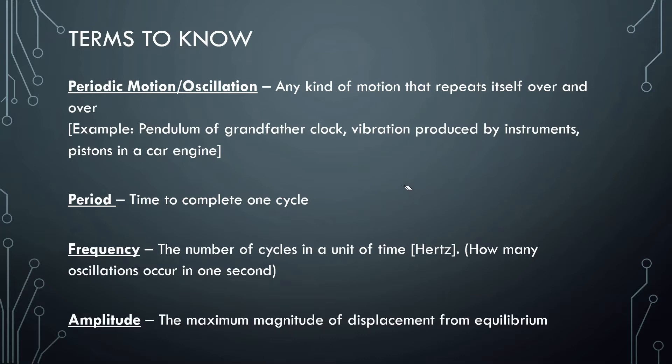Frequency, this is a bit new. The number of cycles in a unit of time, how many oscillations occur in one second. So if something is going back and forth very quickly, how many times it goes back and forth in one second is the frequency. So if the frequency of something is like 5,000, that's telling us in one second it's gone back and forth 5,000 times. Amplitude, the maximum magnitude of displacement from the equilibrium.